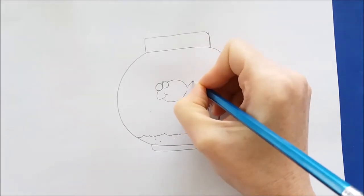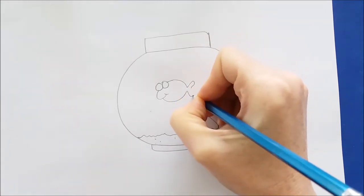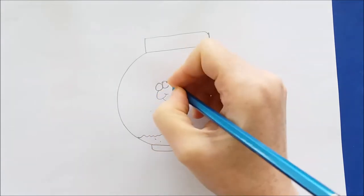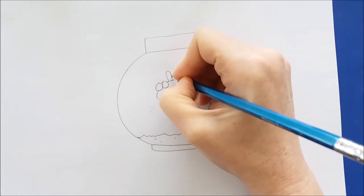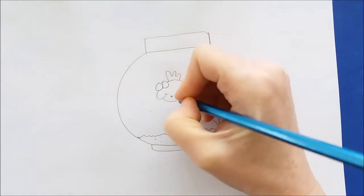And then the tail will be sort of a heart shape. And I'm going to give this fish a little fin on the top. So it's a wavy line like a roller coaster.